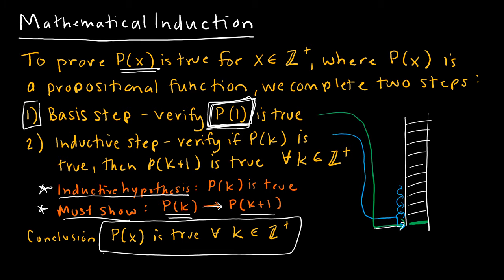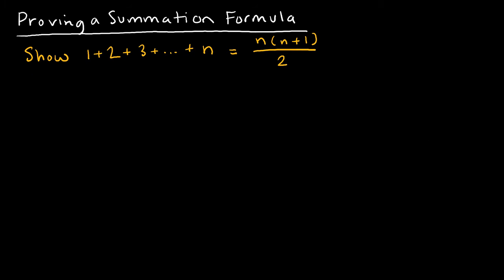So let's take a look at our first example. For our first proof by induction, we're going to prove a summation formula that we've already used in this course, which is the summation as i goes from 1 to n of i is equal to n times n plus 1 divided by 2. On the left side, instead of the summation, I've just written out the sequence of terms instead, and you'll see why in a little bit.